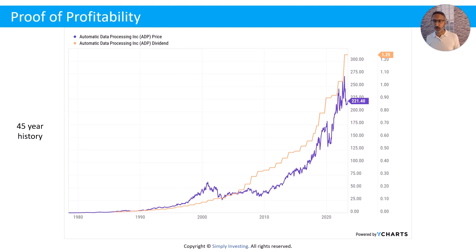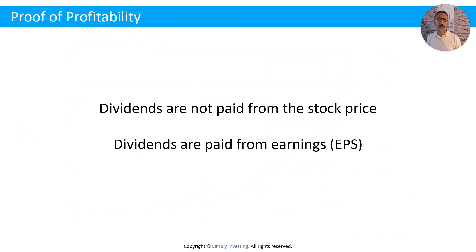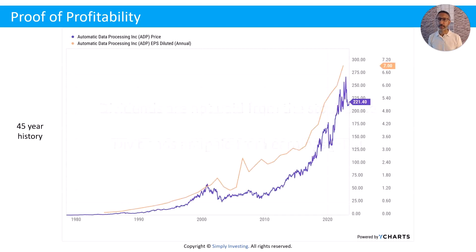How can a company continue to pay and increase the dividend every year when its stock price drops? The answer is that dividends are not paid from the stock price — dividends are paid from earnings. The company has to be able to make a profit, and then they can afford to pay the dividend to the shareholders.